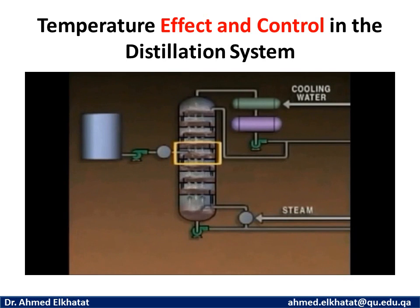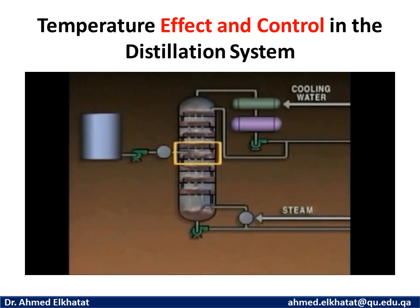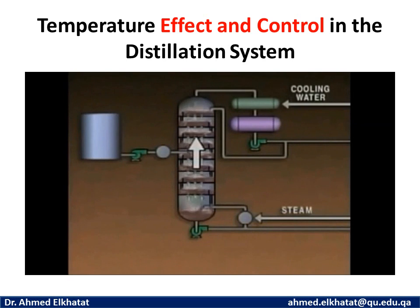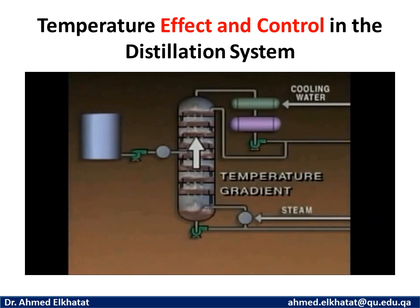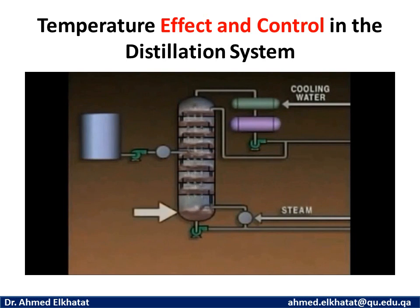If the temperature at the feed point is higher than it should be, more of the heavier components will vaporize and move up the tower instead of moving down as a liquid. If the feed point temperature is too low, less of the lighter components will vaporize, and more lighter components will end up in the bottom of the tower. The temperature decreases as the material moves higher in the tower. This gradual decrease in temperature from the bottom to the top of a distillation tower is called the temperature gradient, measured as the difference between the temperature at the bottom and the temperature at the top.